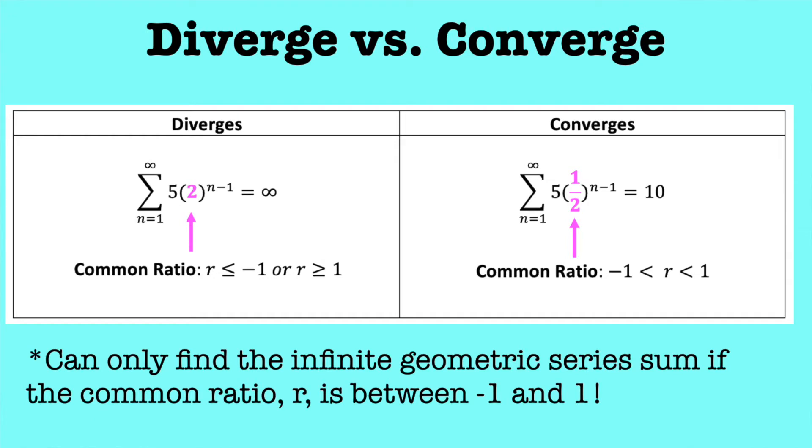So you can see here the difference we have on the left, the ones that diverge, and this happens when the common ratio is less than or equal to negative 1, or greater than or equal to 1. In this example we have a common ratio of 2, which is greater than or equal to 1, that then diverges to infinity.